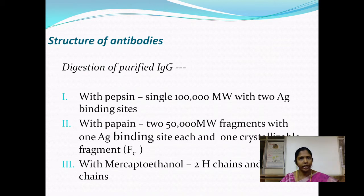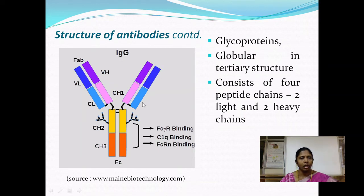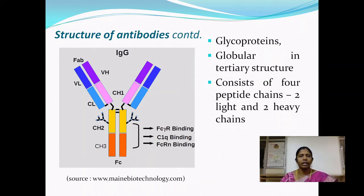When pepsin was used to treat a similar fraction, the two Fab fragments remained connected, giving a molecular weight of around 1 lakh daltons with two antigen binding sites. The crystallizable fragment was lost as small molecules and was not recovered in pepsin digestion. When beta-mercaptoethanol was used, it resulted in four intact polypeptide chains because it denatures all the disulfide bonds. Based on all this information, the structure of antibody molecules was deciphered.